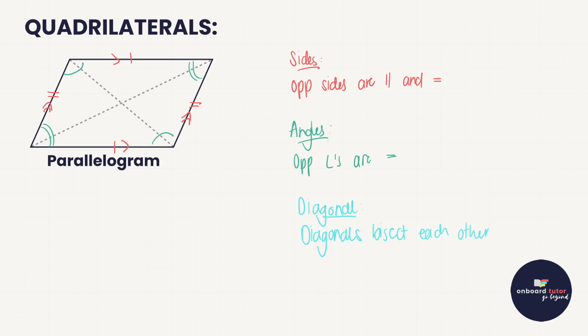What does that mean? It means they cut each other in half. So if we look at this diagonal, it has cut this one in half — this piece here is equal to this piece here, and this piece here is equal to this piece here. So there we go: sides, angles, diagonals.